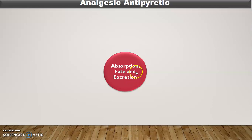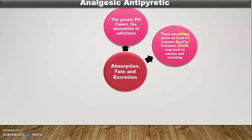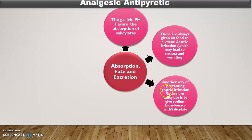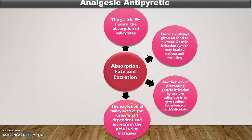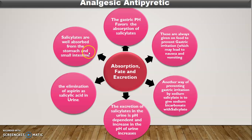Now let's see the absorption, fate, and excretion of salicylates. Salicylates favor absorption at gastric pH. They are always given with food to prevent gastric irritation, because if given on an empty stomach they can cause irritation leading to nausea and vomiting. Another way of preventing gastric irritation is to give sodium bicarbonate with the salicylate. Excretion of salicylates in the urine is pH-dependent; an increase in urine pH increases the elimination of aspirin as salicylic acid. Salicylates are well absorbed from the stomach and small intestine because they are weak acids.